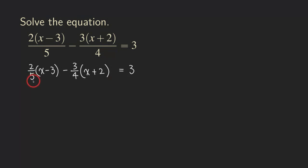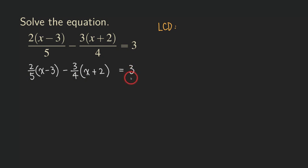Now we can see that there is a denominator of 5 here and a denominator of 4 here, and the denominator for the 3 is actually a 1. So we are going to multiply every term by the LCD to get rid of the fractions. The LCD is based on the 5 and the 4 — we don't need to worry about the 1. So the LCD is a number we can turn both 5 and 4 into, which is 20.